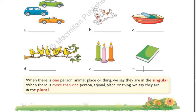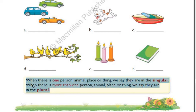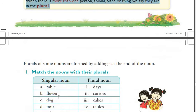We also discussed the definition in the yellow box: when there is one person, animal, place, or thing, we say they are 'singular.' When there is more than one person, animal, place, or thing, we say they are in 'plural' — because there are many, not one. This is what we went through yesterday.